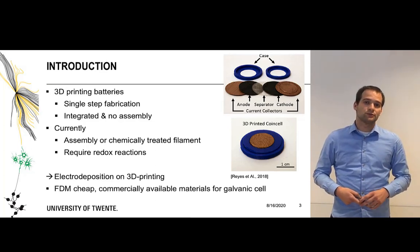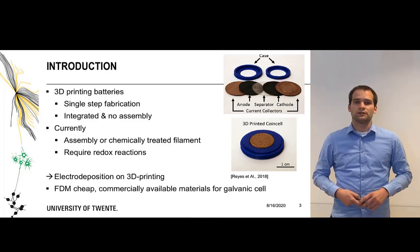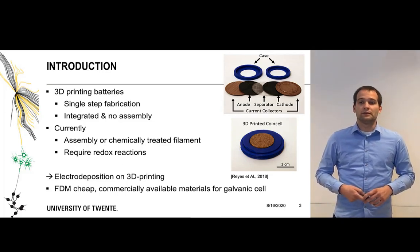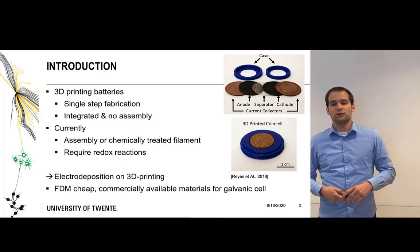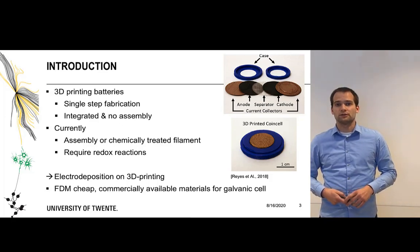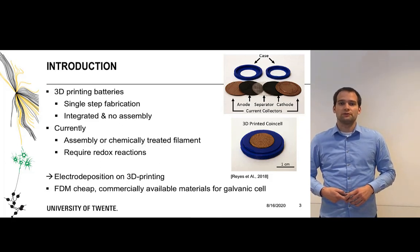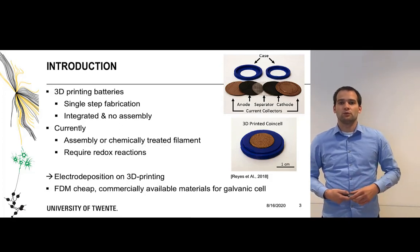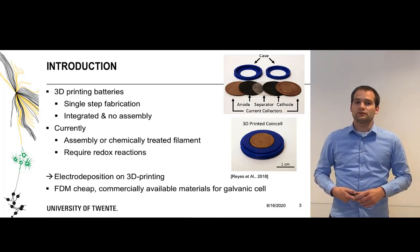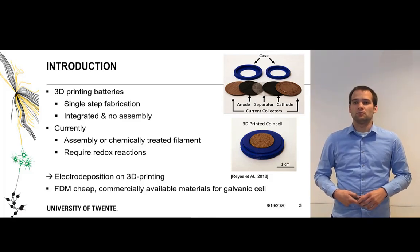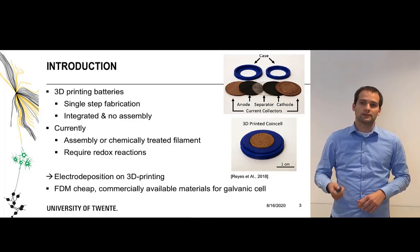Our approach for this in this research is by means of electrodeposition on 3D printing. In past research of Kim and Angel et al they've shown that you can deposit for example copper on conductive polymer composites which can be fabricated with a standard 3D printer with commercially available filaments and by means of this we hope to achieve 3D printing batteries with a FDM printer with cheap commercially available materials for a galvanic cell.